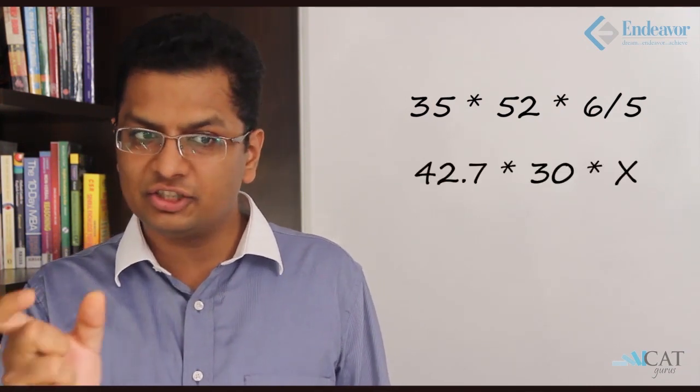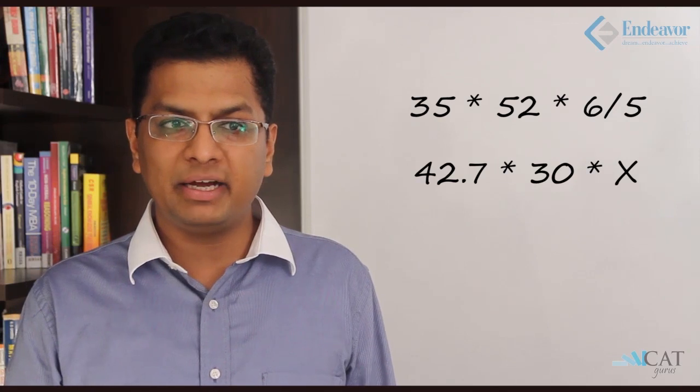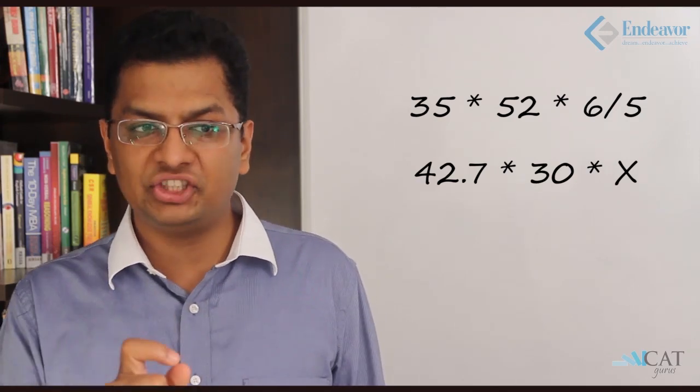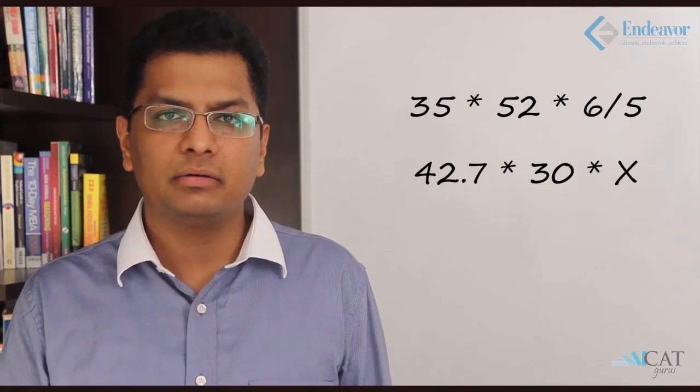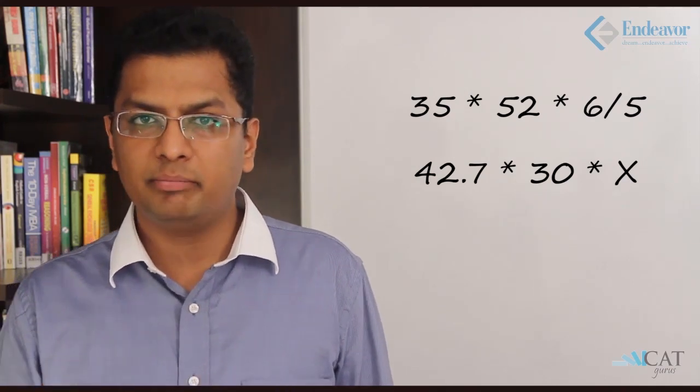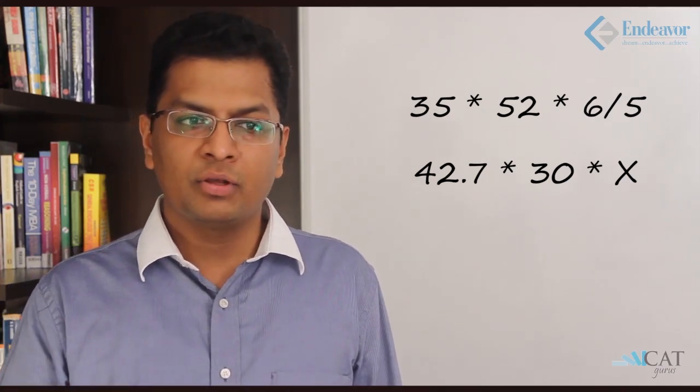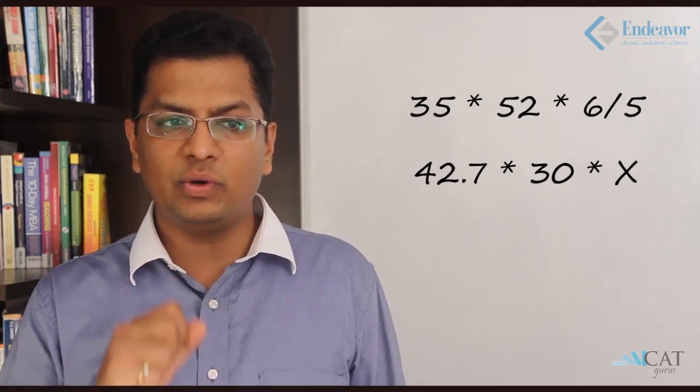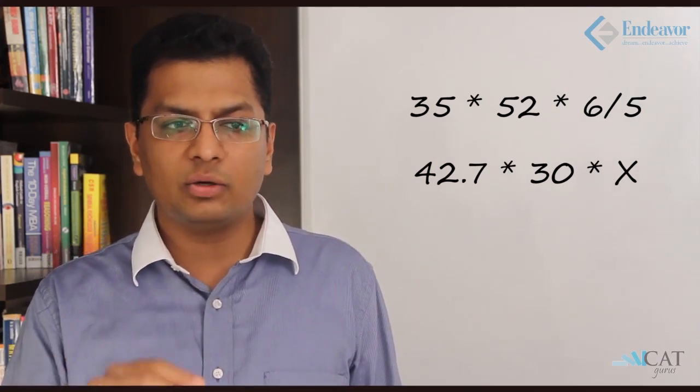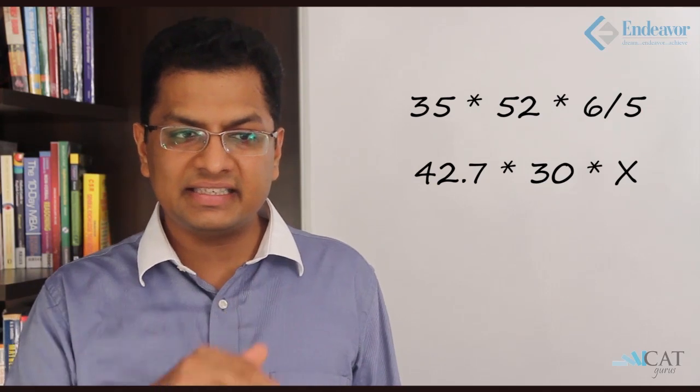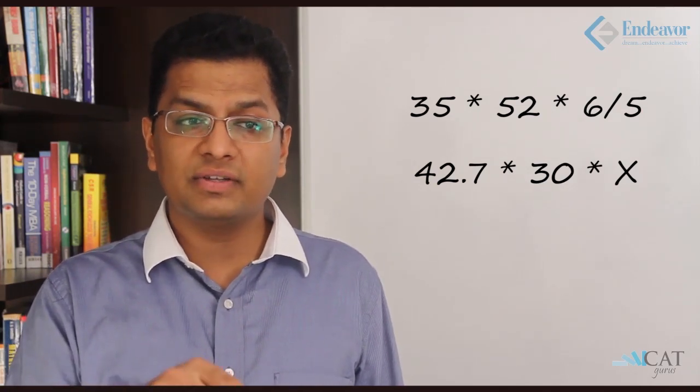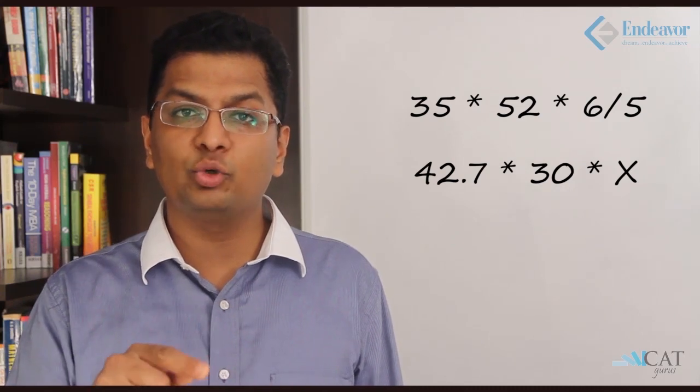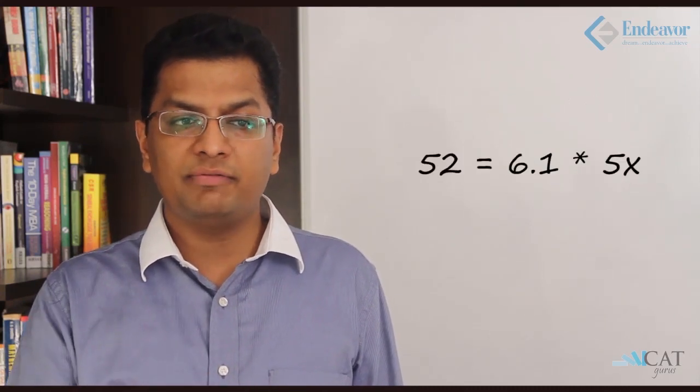Now this should be equal to the export. So export is 42.7, the total export, multiplied by 30%, which is USA share, multiplied by x. Now let x be a factor which we have to calculate. Based on x we will get the answer. So equating both sides, we can cancel out the 5 and 35, and then the 6 and 30, and thereafter the 7 can be cancelled by 42.7. So it will be 52 on this side, and 42.7 will reduce to 6.1 × 5.